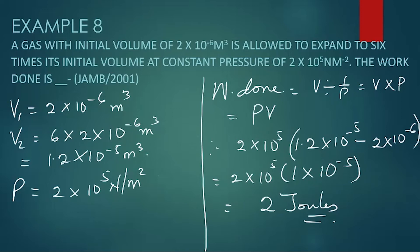So 1.2, that's 12 minus 2, that's 10 exponent minus 5. Wait, let me confirm that. 1.2 exponent minus 5 minus 2 exponent minus 6. Okay, that's 1 exponent minus 5. And you get your answer as 2 joules. So that is the answer to JAMB 2001.